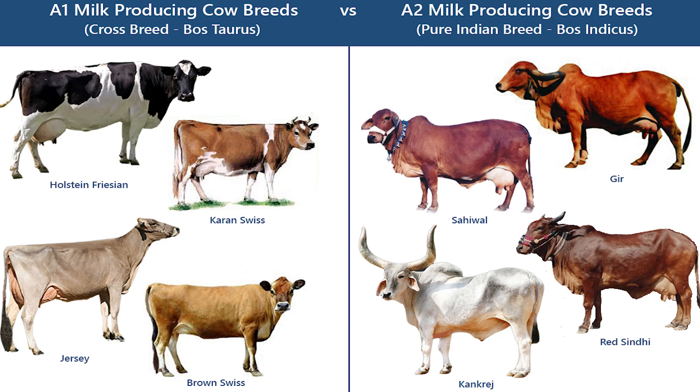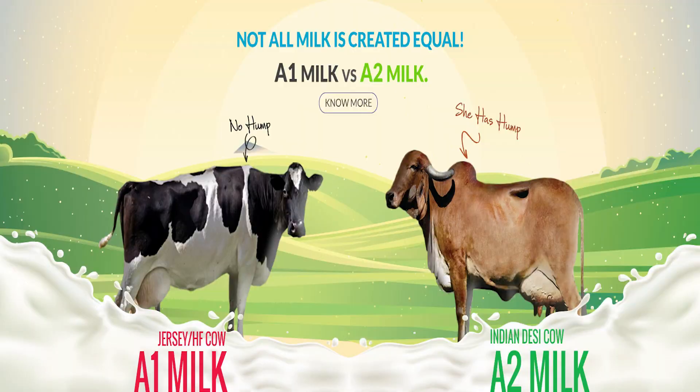What is the milk? A2 and A1 — do you know why A2 and A1 came? Amino acid. That's it.